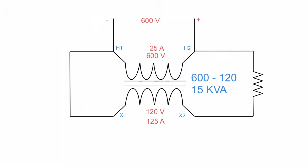From our earlier discussion on transformer ratings, whatever polarity H1 has, X1 will share the same polarity. So if H1 is negative, then X1 must also be negative; if H2 is positive, then X2 is positive. Now with polarity and ratings set up, we have positive 600 volts going into a negative 120 volts.